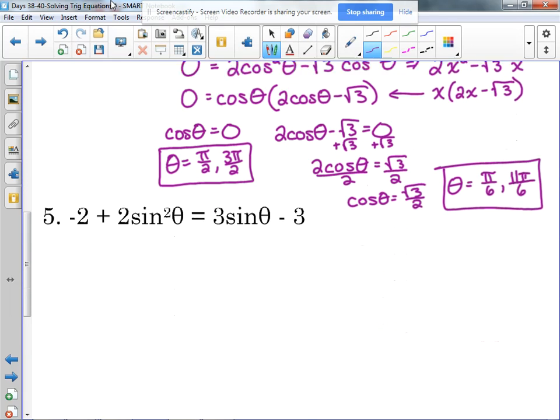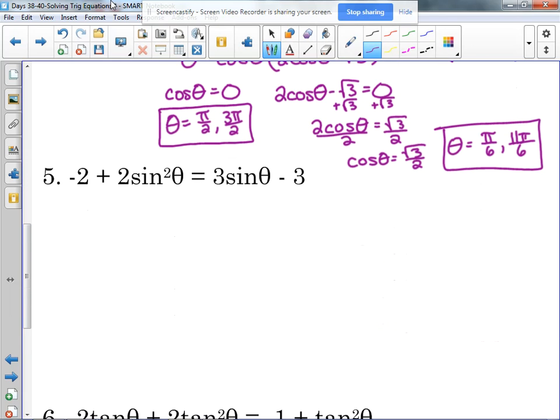Let's look at number five. Number five is similar to number four. We've got sine and sine squared this time. So again, any time you see something squared, it really needs to be equal to zero. It's positive where it's at, so I'm going to move what's on the right side.